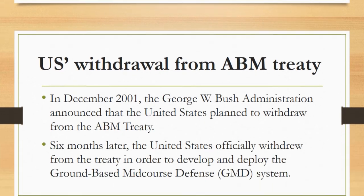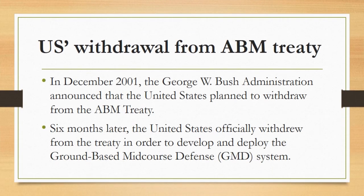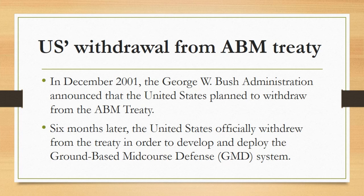The ABM Treaty was an important move of Cold War time. The Cold War ended in 1991, but both Russia and the United States continued their agreement until 2001, when the United States withdrew from the ABM Treaty. In December 2001, the George W. Bush administration announced that the United States planned to withdraw from the ABM Treaty. Six months later, the United States officially withdrew from the treaty in order to develop and deploy the ground-based mid-course defense system, known as GMD.